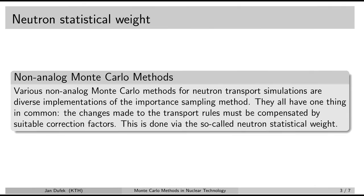If you recall the importance sampling method correctly from one of our previous lessons, you may remember that in order to obtain the correct results we had to apply correction factors to the samples. The same we have to do in non-analog Monte Carlo simulations of the neutron transport as well. We have to apply correction factors to all the results obtained during the non-analog simulations. Every time we changed the sampling rules — the probability density functions — we had to compensate the results by applying correction factors.